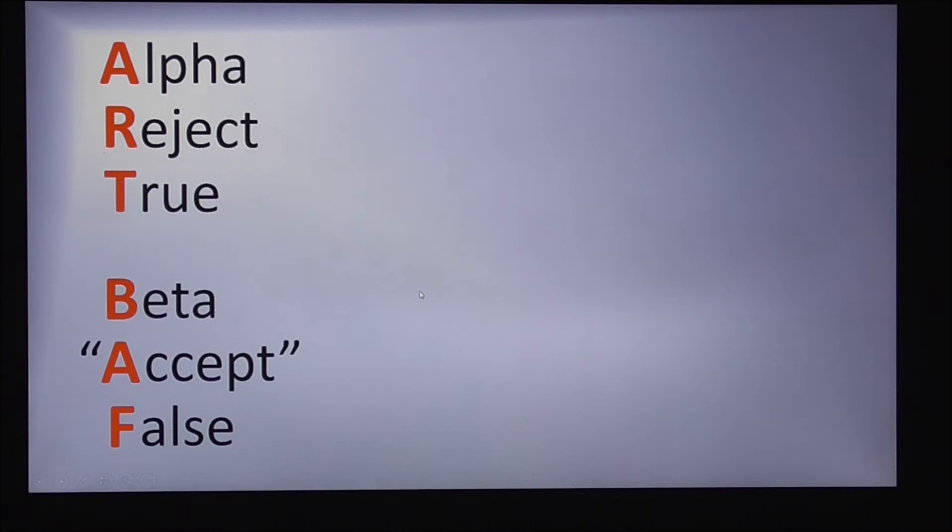On the other hand, beta is the probability that I would accept a false null hypothesis. Now, I put in the word accept in parentheses because we really don't ever accept the null hypothesis. We either reject it or we fail to reject it. Fail to reject and accept are similar things. They're not exactly the same, but I'm going to skip the minutiae of that for the time being.